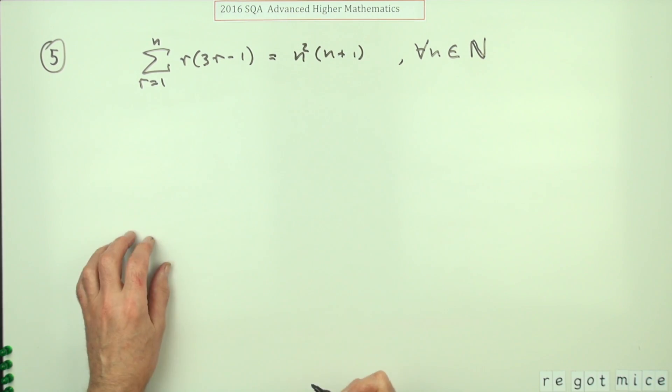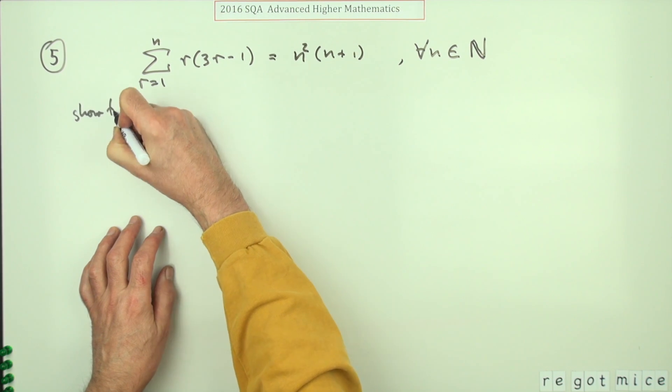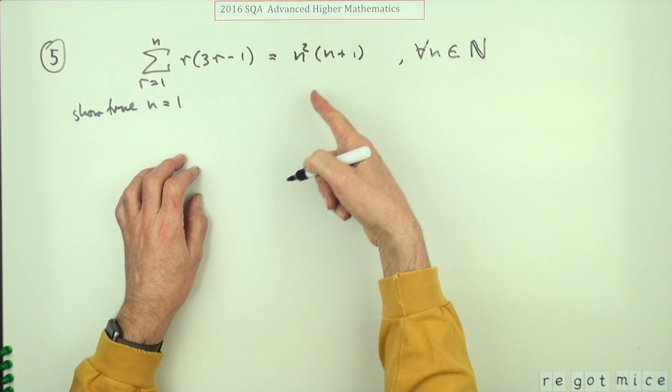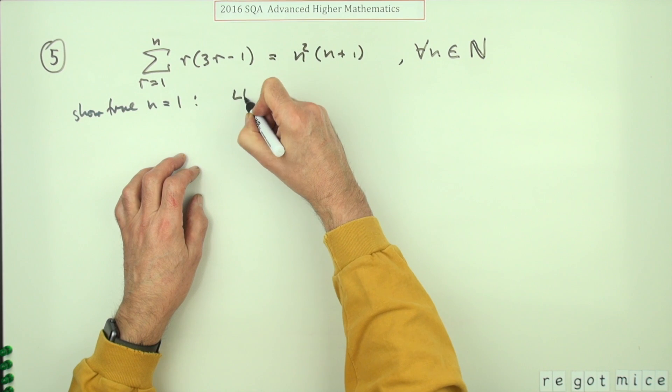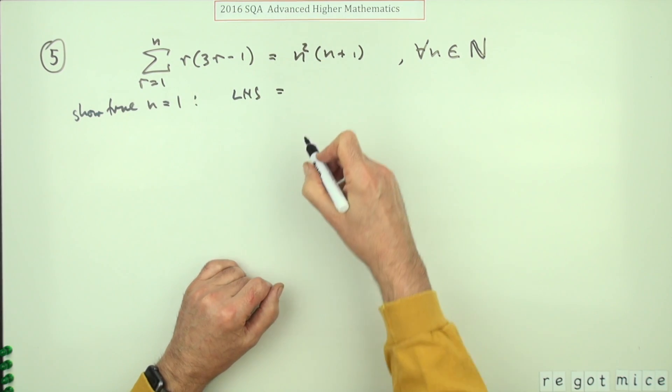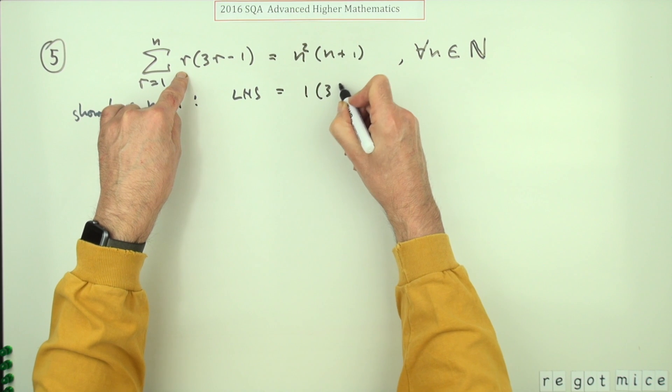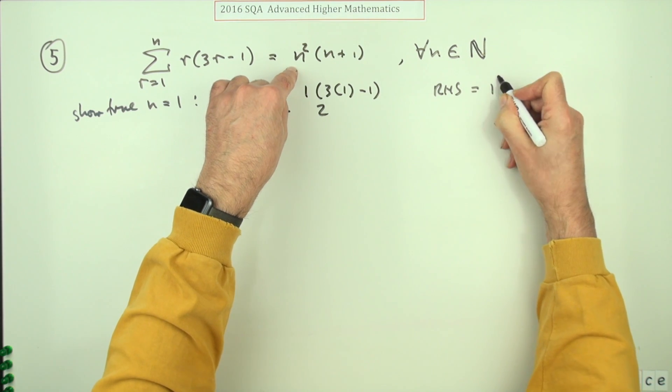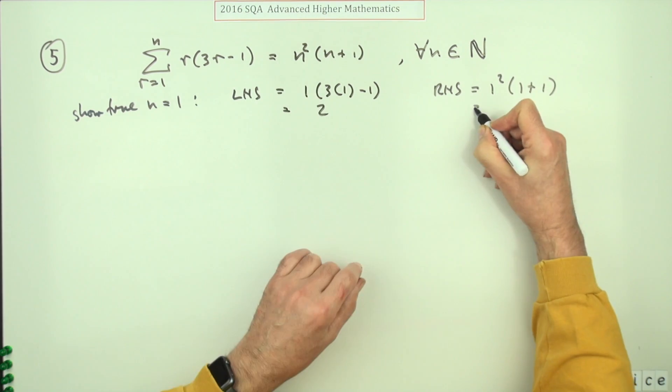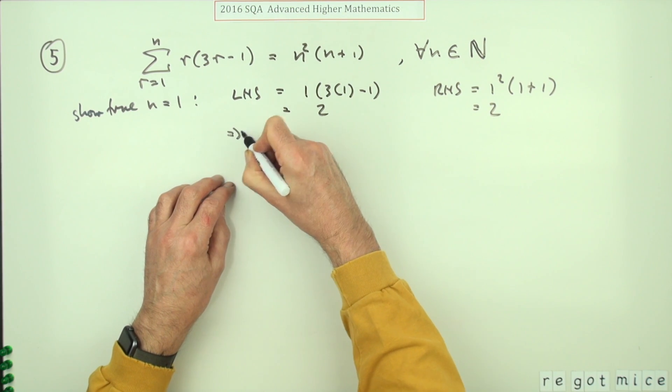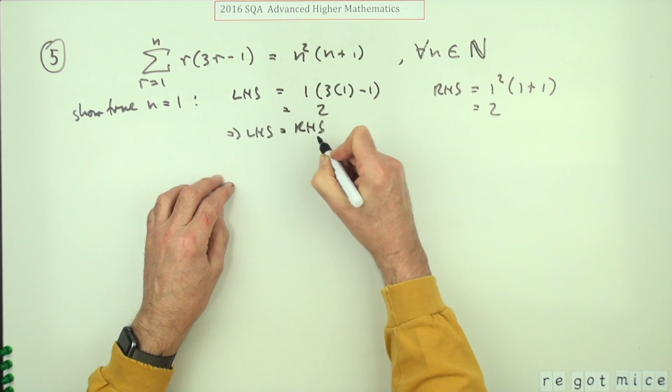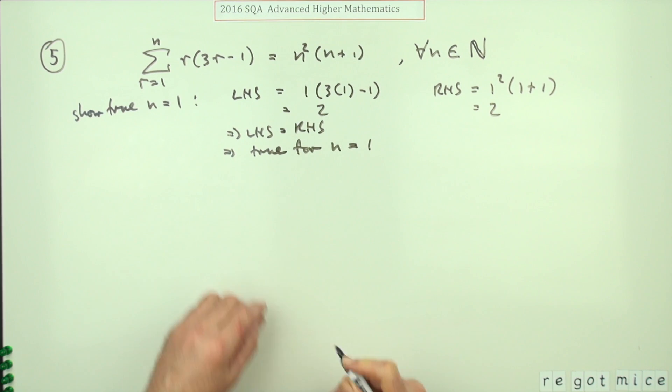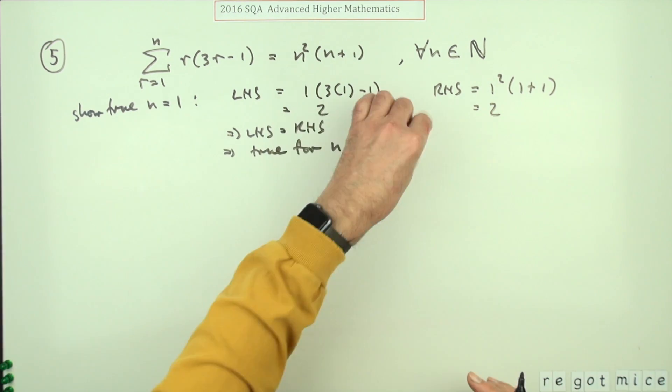So the first thing is to show that it's true. Demonstrate, or you could say show true for n equals one. That means working out both sides and not just stating the result. So you take the left-hand side and see what you've got. If n is one, it'd be 1 × 3(1-1) which equals 2. Similarly, the right-hand side would be 1² × (1+1), 1 × 2 is 2, which means the left-hand side equals the right-hand side. The important thing is you now have to state it's true for n equals one. And after you've done all of that, you get your first mark.